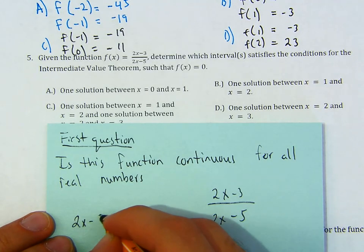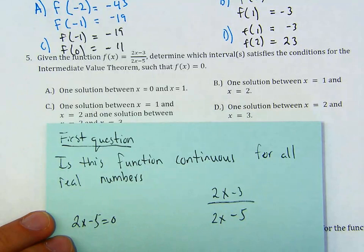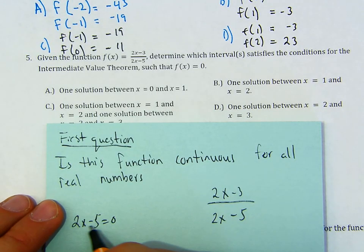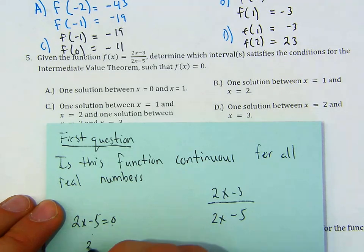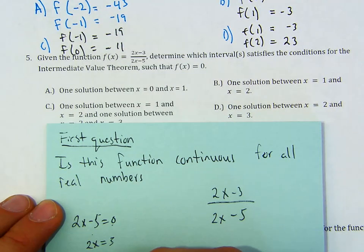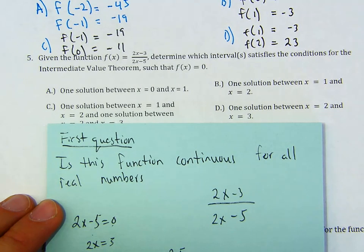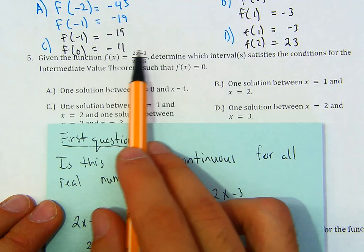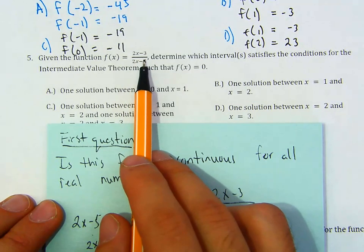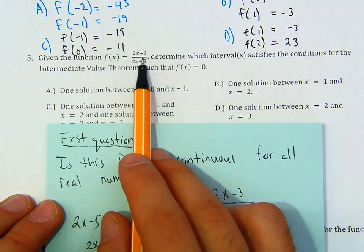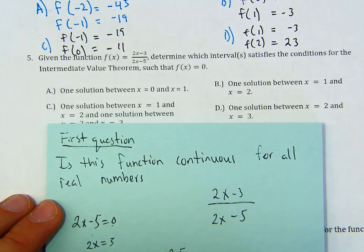If I have 2x minus 5 equals 0 and I solve for x: plus 5, plus 5, so 2x equals 5, so x equals 5 over 2. And 5 over 2 equals 2.5. This function is a rational function, and it is continuous for all real numbers except 2.5. You're not allowed to use 2.5.